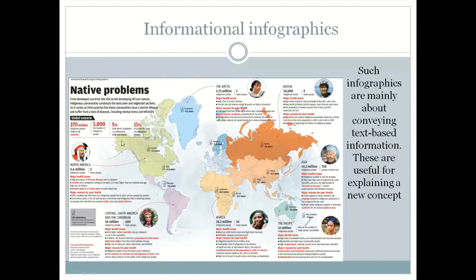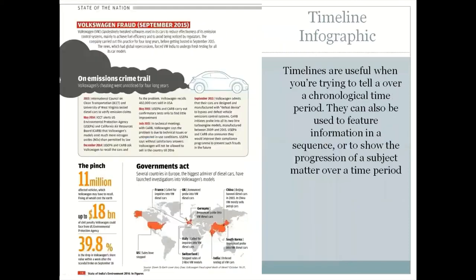The third type is the timeline infographic — the top part is basically the timeline. There are better examples available, but this shows what a timeline looks like. This particular example was part of the Volkswagen cover story done in Reform 2014.